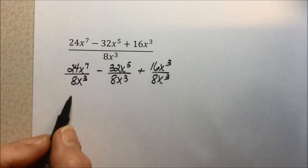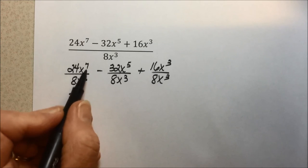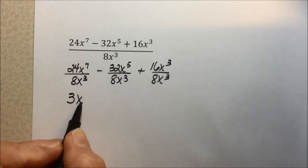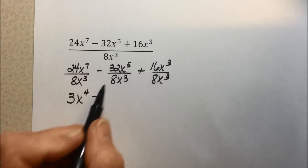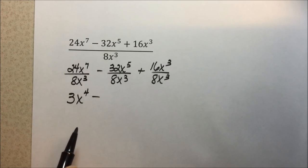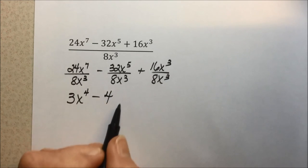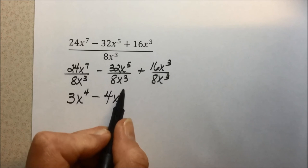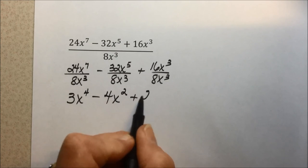24 divided by 8 is 3. Common bases in a division situation, subtract the exponents. 7 minus 3 leaves us with x to the fourth power. 32 divided by 8, dividing the coefficients, leaves 4. Common bases, subtract the exponents, leaves x to the second power.